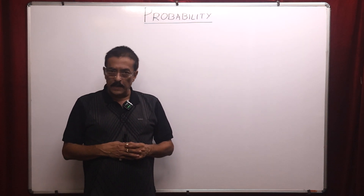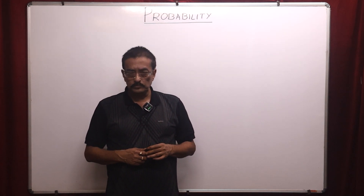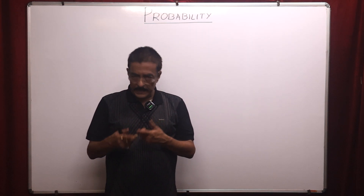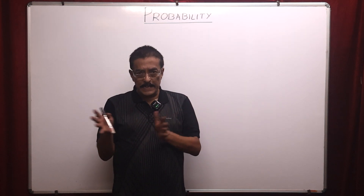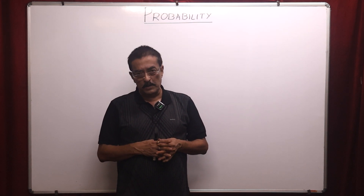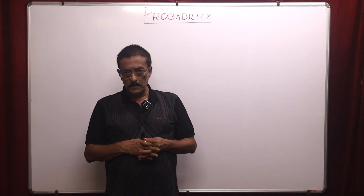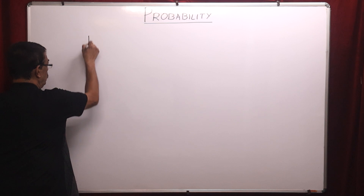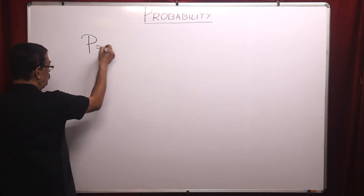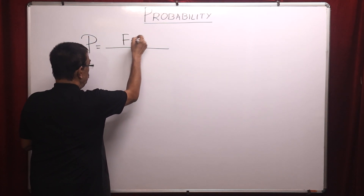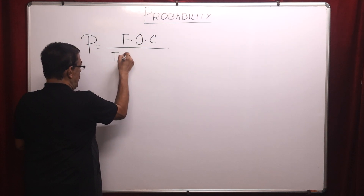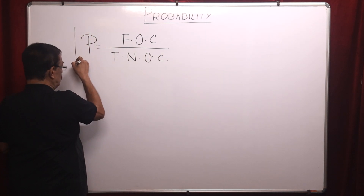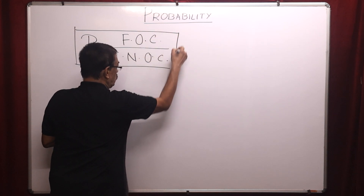Problems of coin and problems on boys and girls follow the same pattern. If I toss one coin, there are two results — either head or tail. The total number of outcomes is called total number of outcomes. If I need head, that is my favourable outcome. So probability for everything equals favourable outcome divided by total number of outcomes. This is the fundamental theory — with this you can solve all problems.